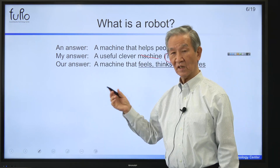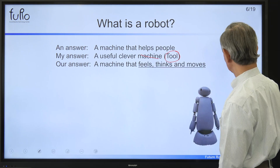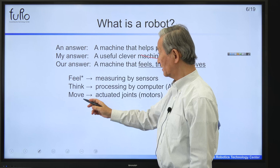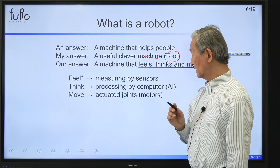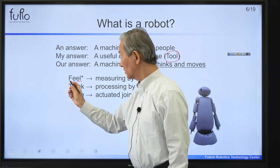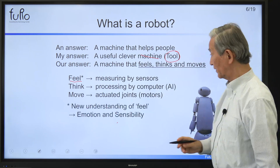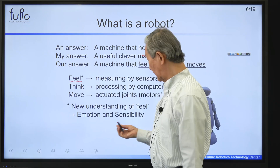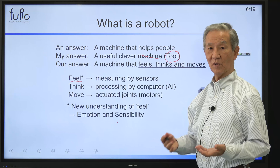A robot can feel, think, and move using sensors to measure, computers to process, and motors to move. But the word 'feel' has a newer meaning nowadays — it is also represented by emotion and sensibility. So you can talk about emotional robots or emotion in robots.